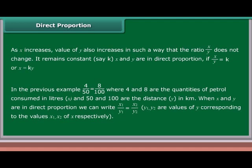When x and y are in direct proportion, we can write x1 upon y1 is equal to x2 upon y2, where y1 and y2 are values of y corresponding to the values x1 and x2 of x respectively.